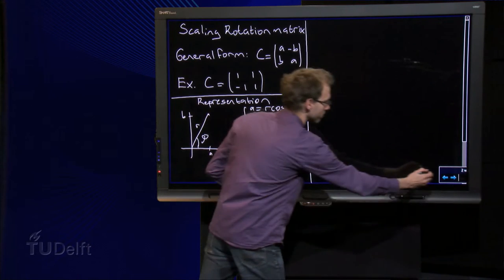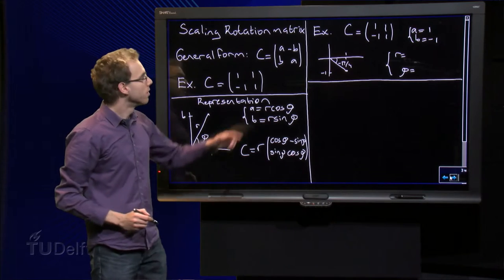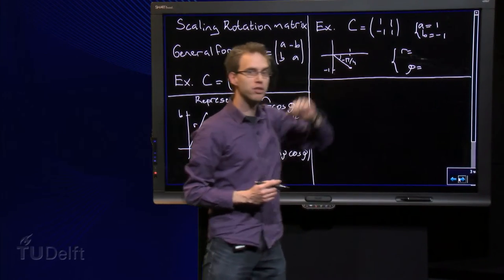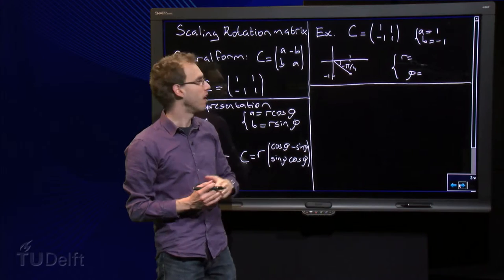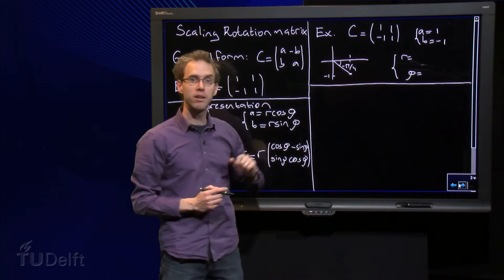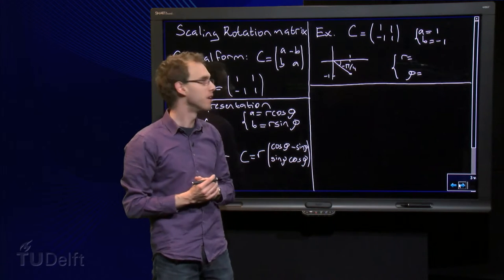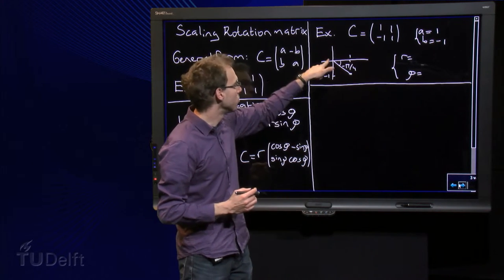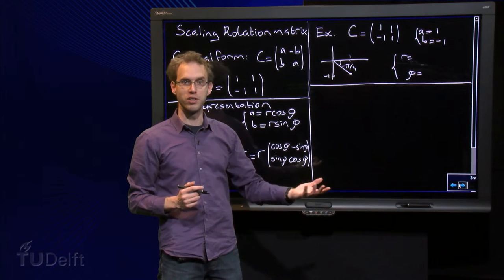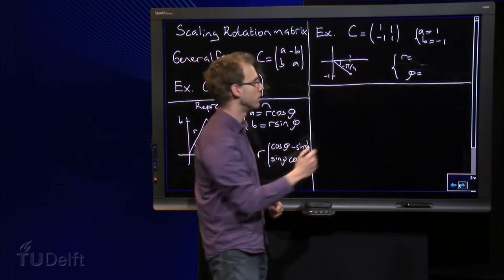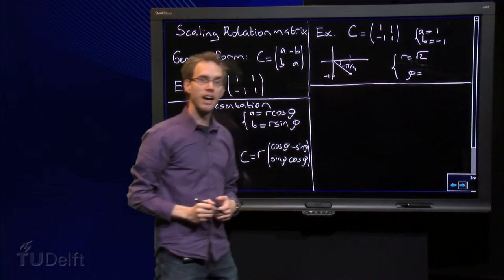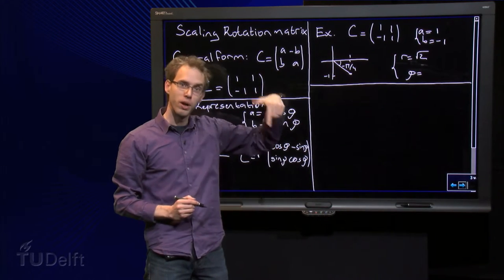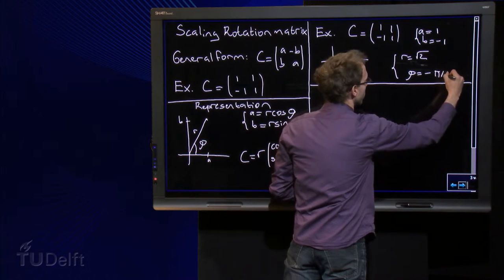Let's look at an example. So, here we have our C again, the same C as we had over here. We had A equals 1, B equals minus 1. What do we get for R and for phi? Well, R is the distance from the point to the origin, so 1 squared plus minus 1 squared equals 1 plus 1 equals 2, and then the square root, so we get the square root of 2 as a scaling factor here. And the angle phi equals pi over 4, but we go the other way around, so phi would become minus pi over 4.